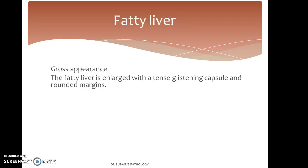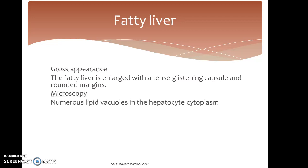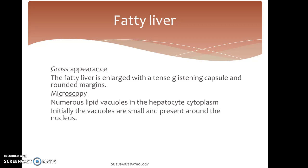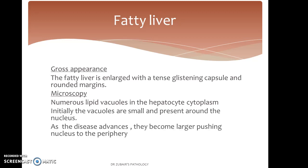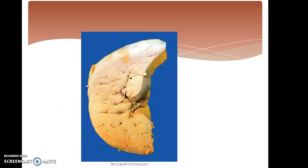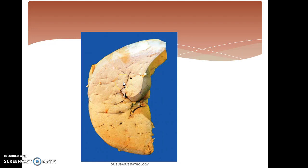On gross examination, the fatty liver is enlarged with a tense, greasy capsule and rounded margins. This is the gross appearance — we have rounded edges of the liver, the capsule becomes tense, and the liver appears greasy with a sort of buttery appearance.